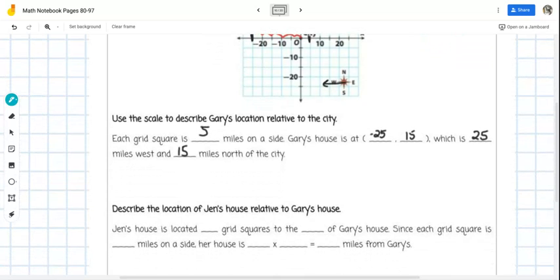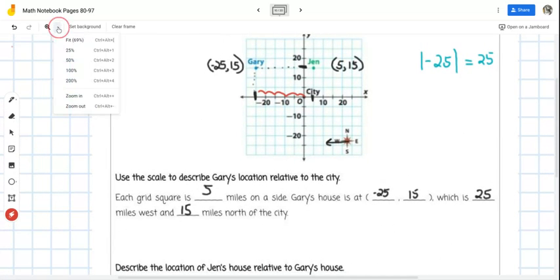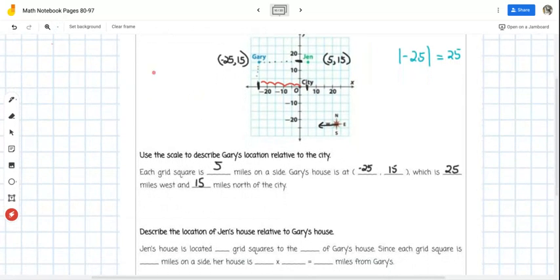Let's move on. We're going to go down to the second part of our page here where it says to describe the location of Jen's house relative to Gary's house. Jen's house is located blank grid squares to the blank of Gary's house. Let's take a look at this. If I was to travel from Gary's house to Jen's house, if I was just to walk there or ride a bike or whatever, it is one, two, three, four, five, six grid squares to the east. So six grid squares to the east of Gary's house.